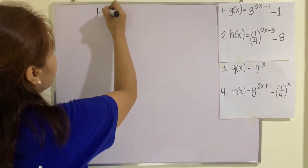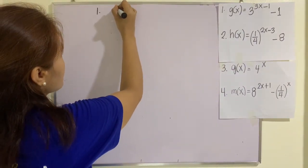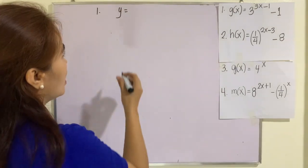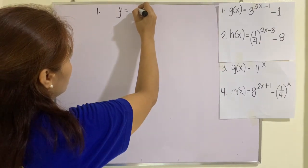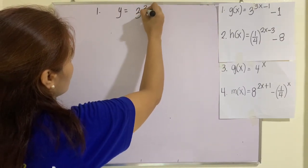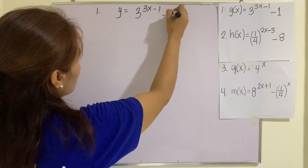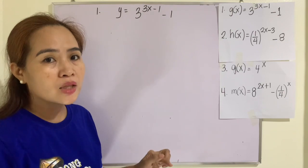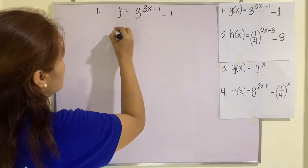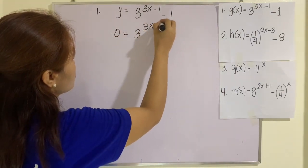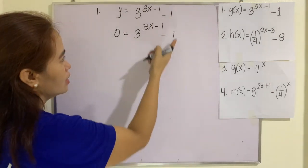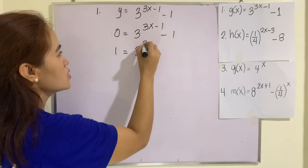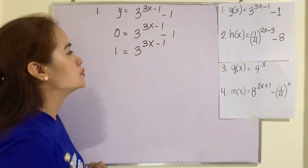Example number one: we have g of x is equal to 3 raised to (3x minus 1) minus 1. Remember that g of x can be written as y. To solve for the zeros, always set y to 0, so: 0 equals 3 raised to (3x minus 1) minus 1. Transpose 1 to the other side: 1 equals 3 raised to (3x minus 1).